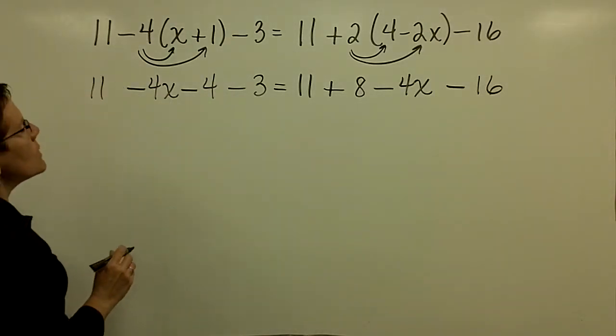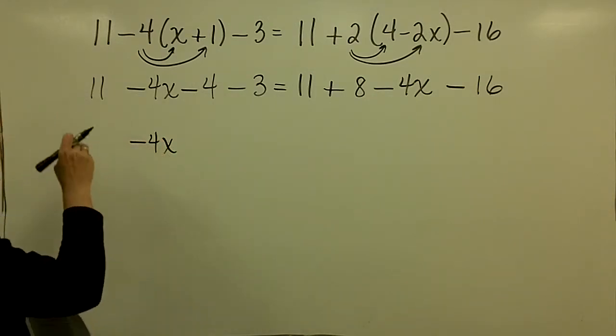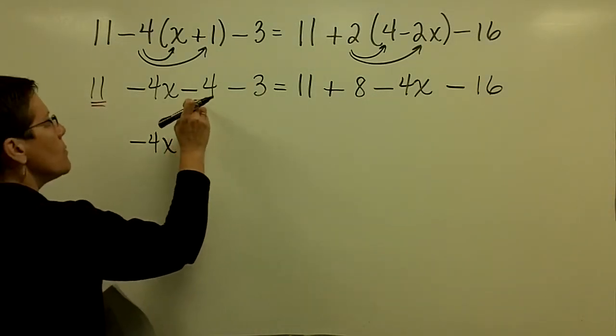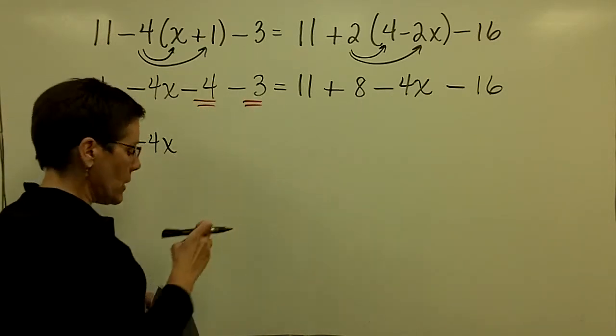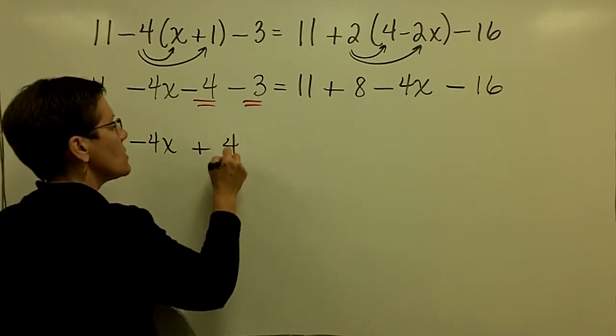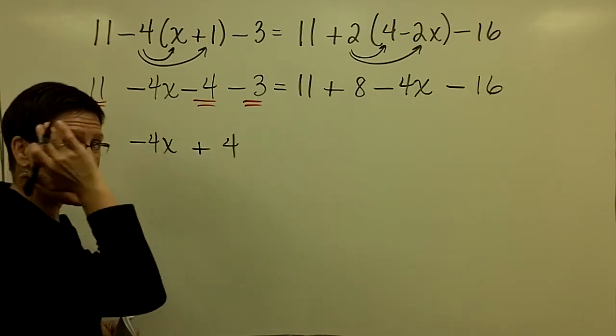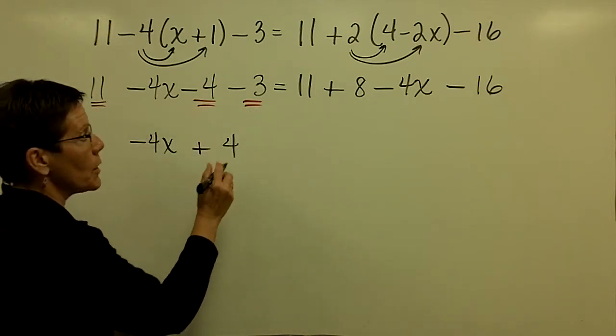Let's now collect our like terms. So I'm going to bring this negative 4x down, but 11 minus 4 is 7, minus 3 is 4. So I went ahead and worked left to right and kept those values in my head. Again, 11 minus 4 is 7, and 7 minus 3 is 4.